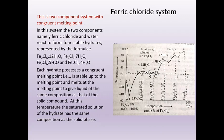Coming to the ferric chloride system: this is a two-component system with a congruent melting point. The two components, ferric chloride and water, react to form four stable hydrates: FeCl₃·12H₂O, FeCl₃·7H₂O, FeCl₃·5H₂O, and FeCl₃·4H₂O. Each hydrate has its own congruent melting point — it is stable up to that melting point and melts to give a liquid of the same composition. At this temperature, the saturated solution of the hydrate has the same composition as the solid.